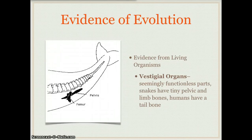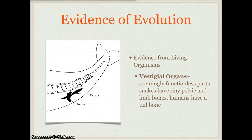Another example of evidence of evolution is vestigial organs — organs that are seemingly functionless. For example, snakes have tiny pelvic and limb bones, or humans have a tailbone, but these organs probably had a function at one time. The picture shows a whale with a pelvis and a femur — we know that whales don't use this pelvis and femur, but they still have it.